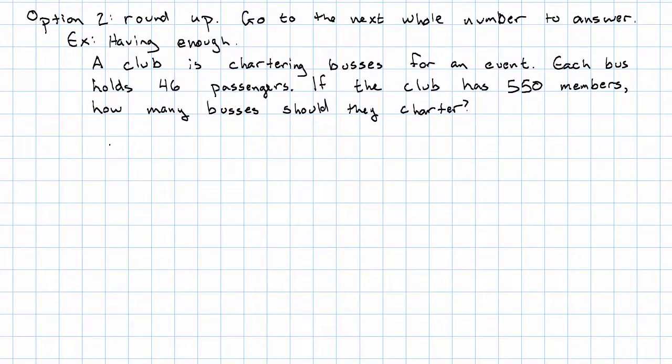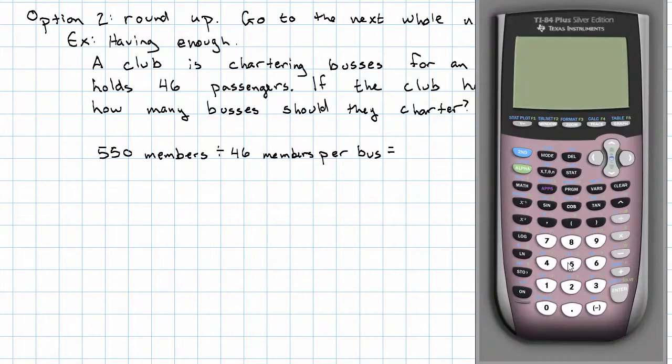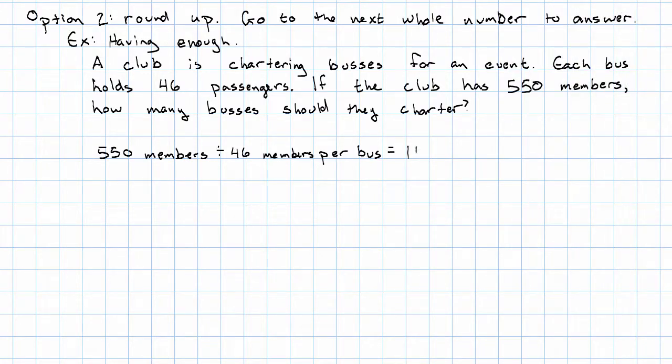So again, we're going to do division here. 550 members divided by 46 members per bus, right? What does that make? 550 divided by 46, 11 and then some remainder. 11 buses, and then some number of members are left over.